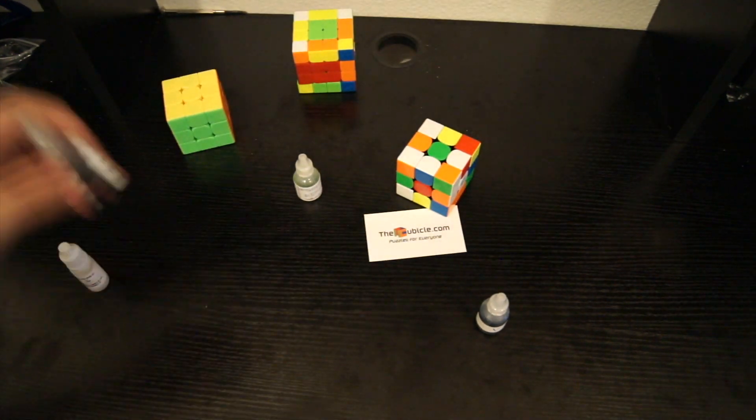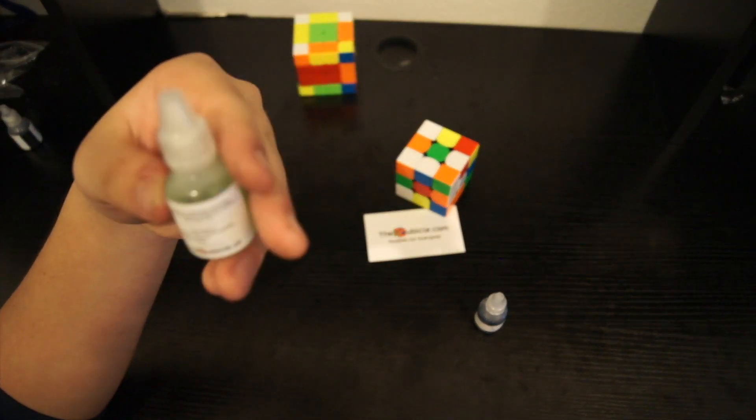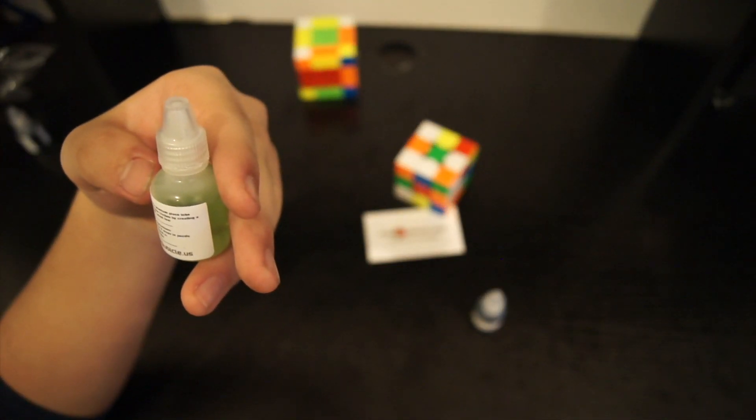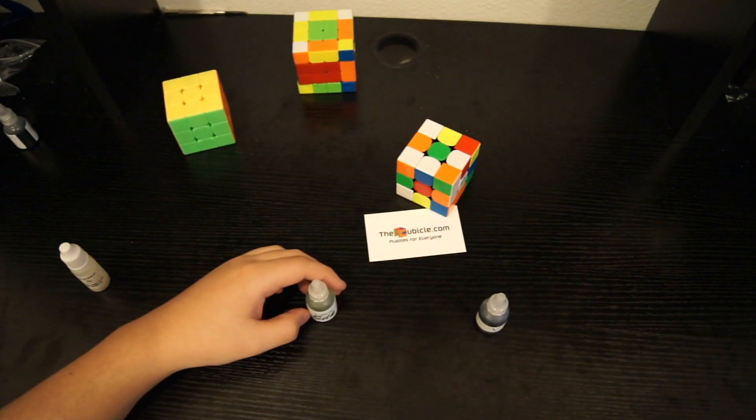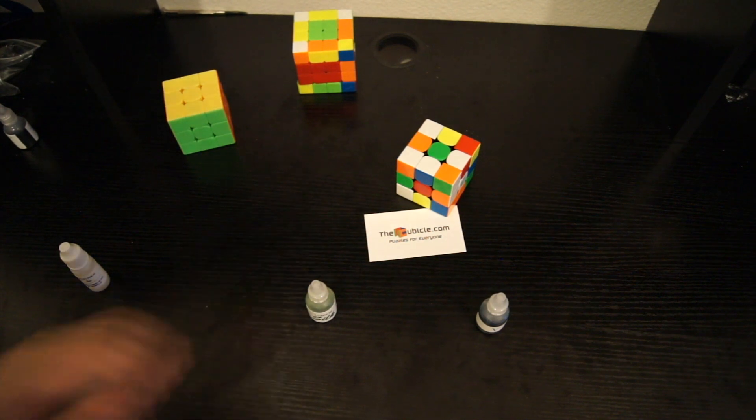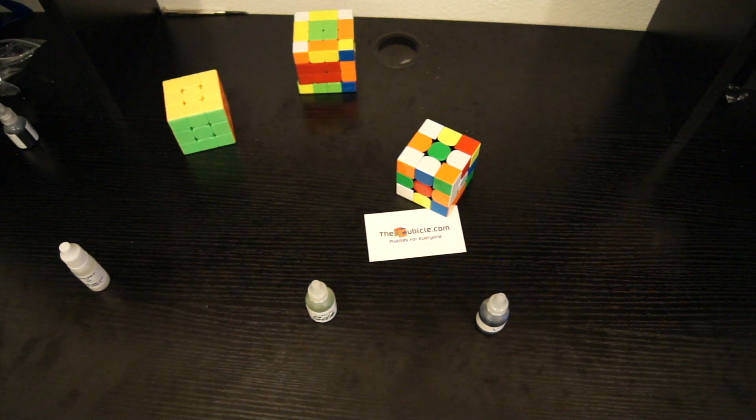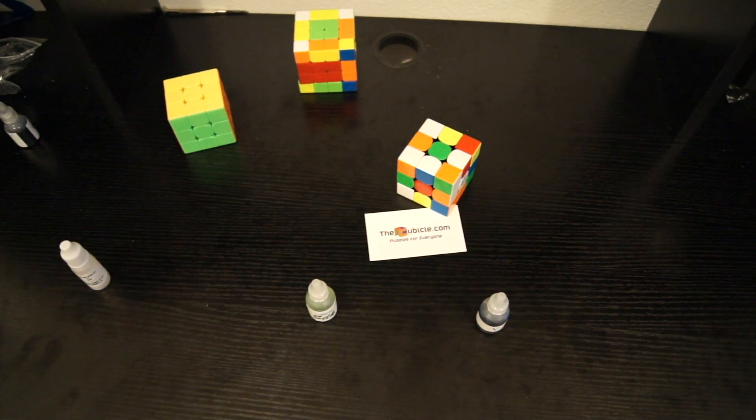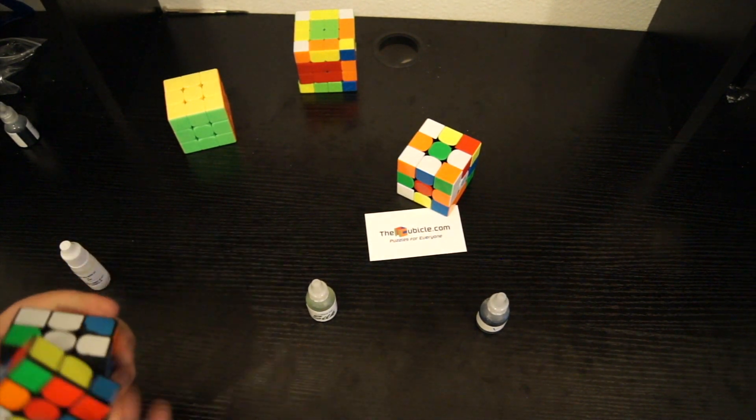Alright, now that's done. I've got Lubricle Silk. This is supposed to reduce friction, and it's actually supposed to fill in damaged parts of your cube. And I have a cube that's pretty damaged on the inside. It's the solution level magic.